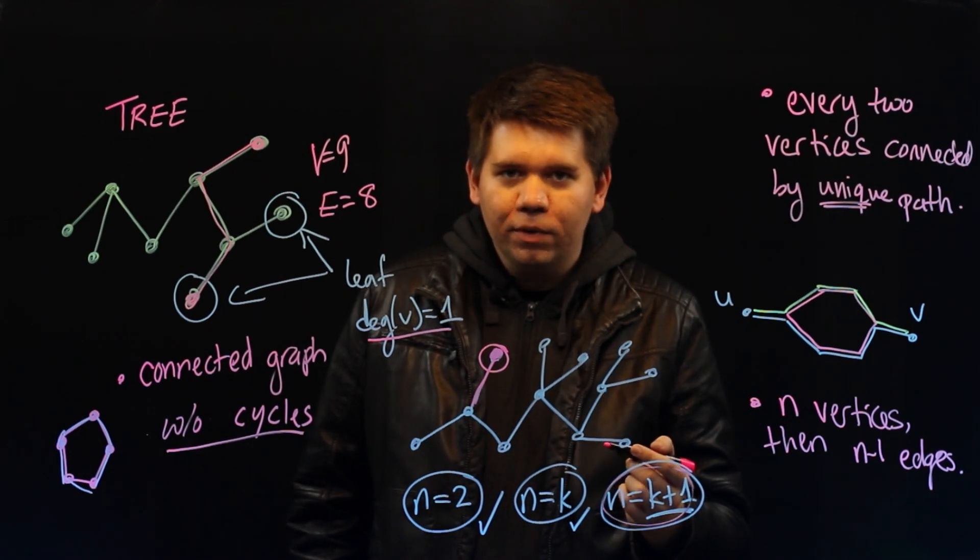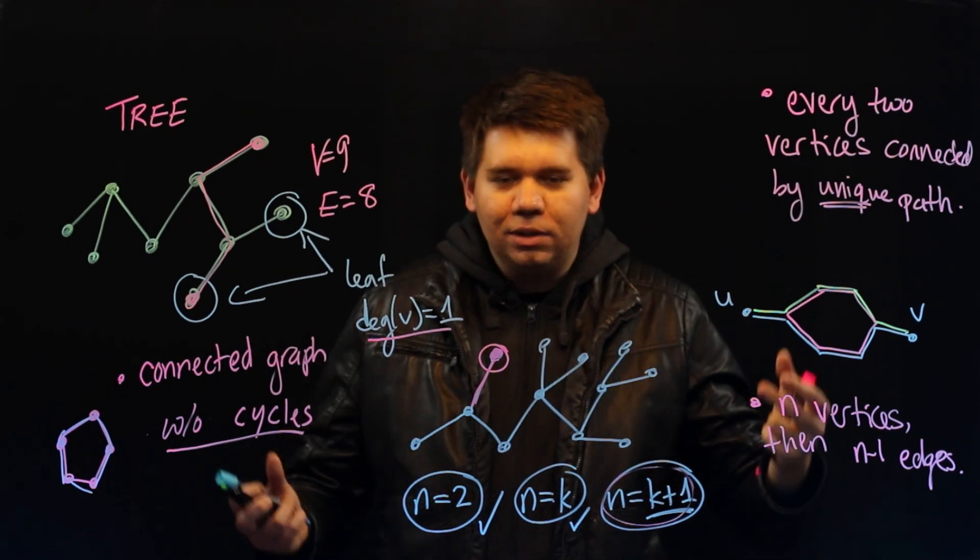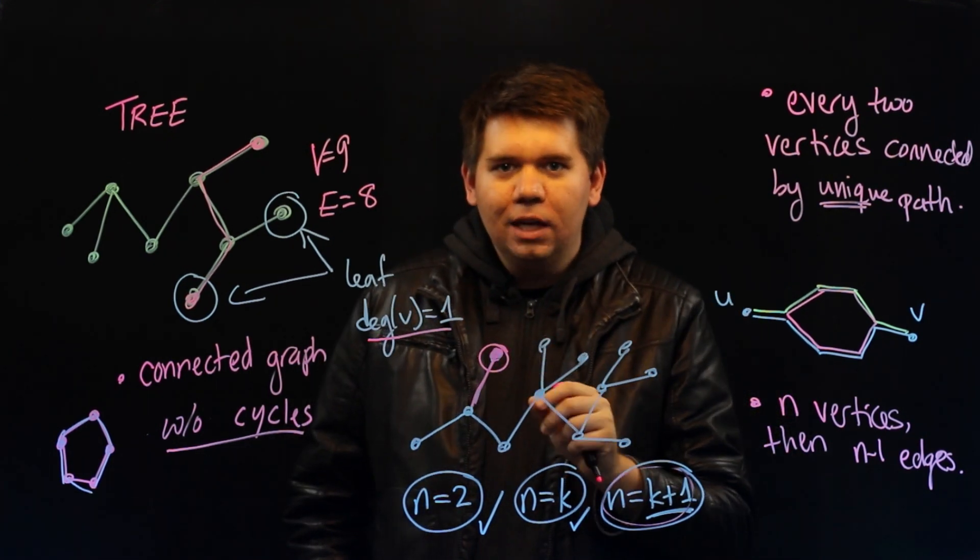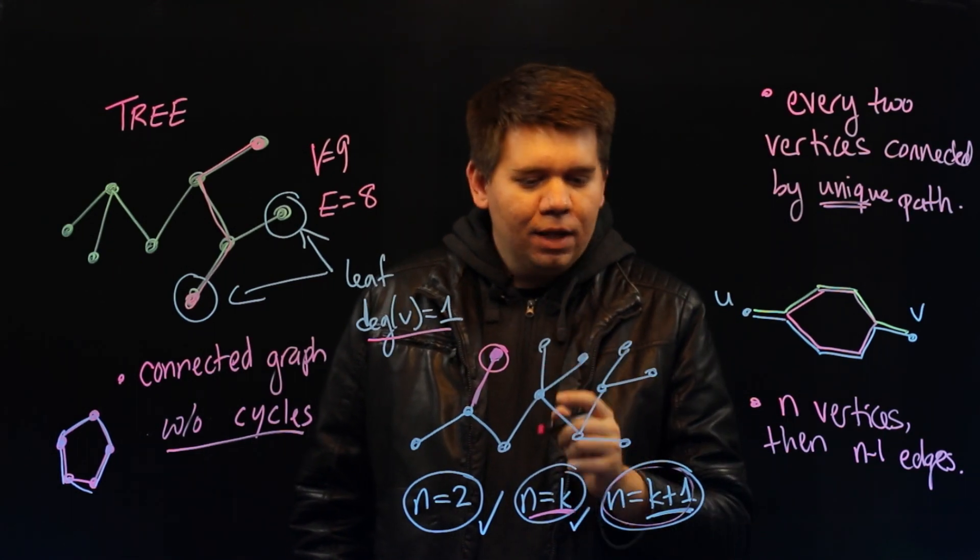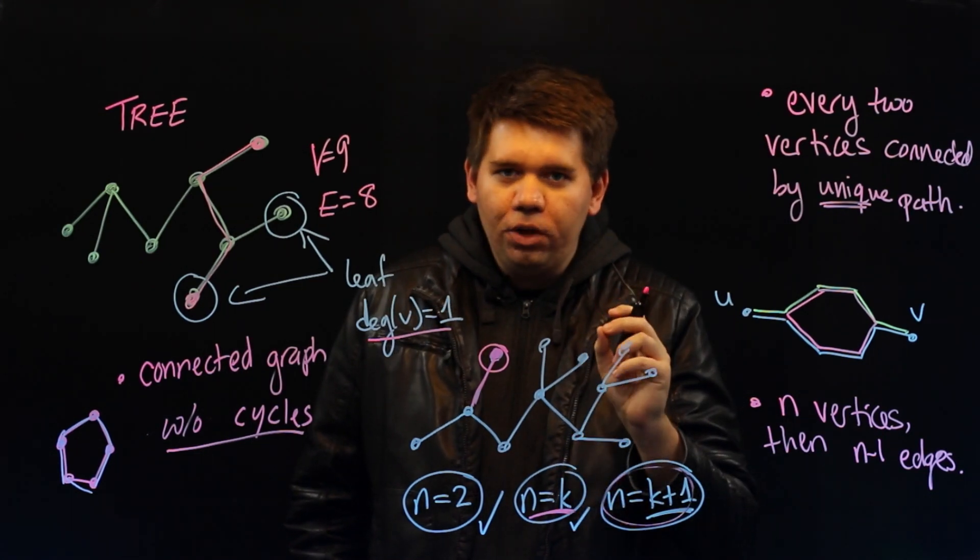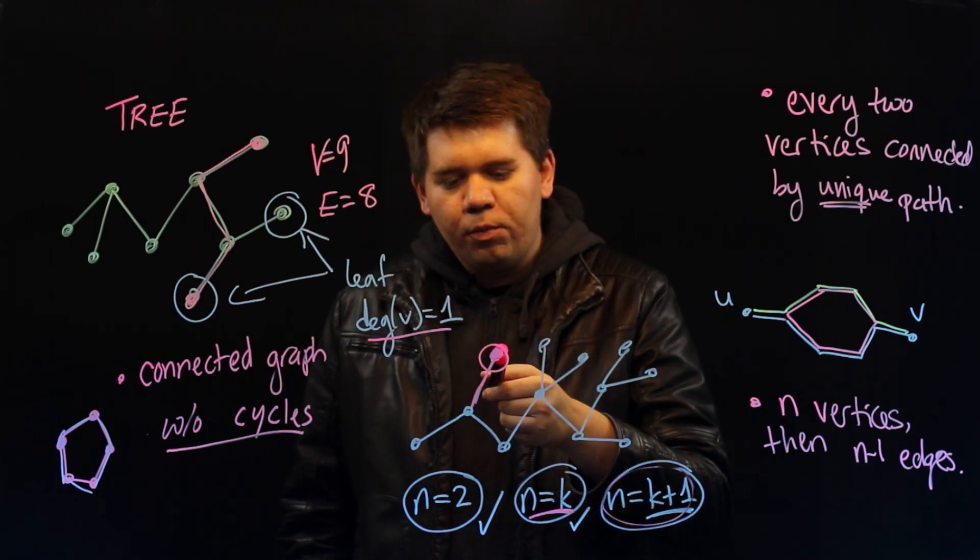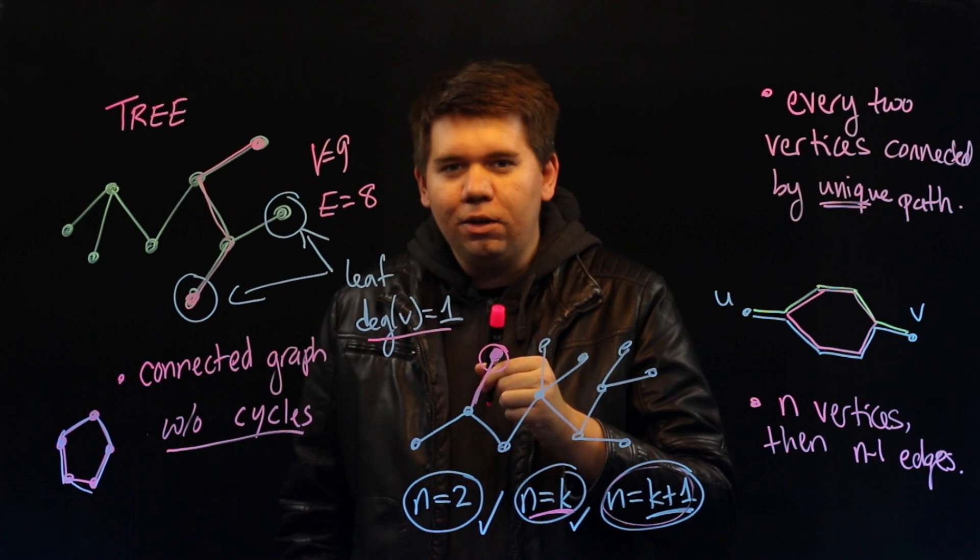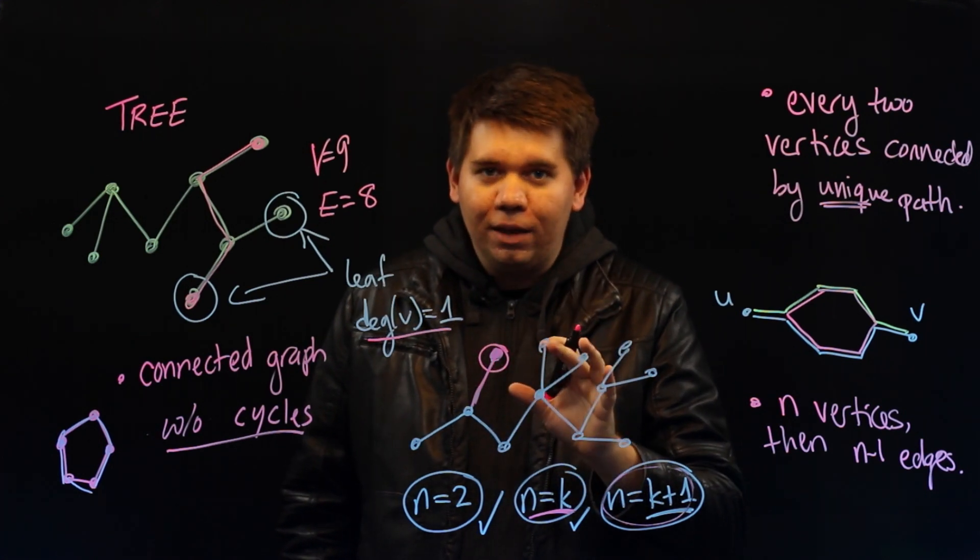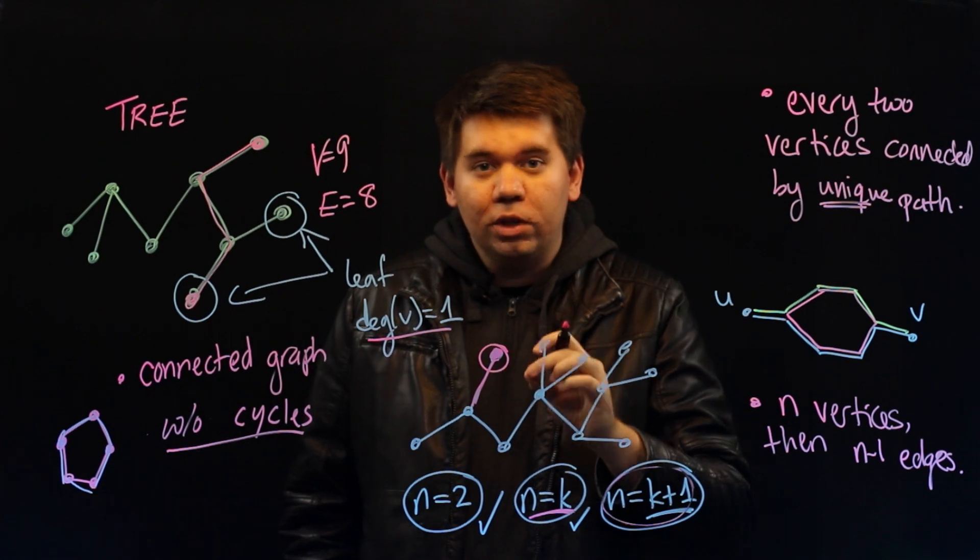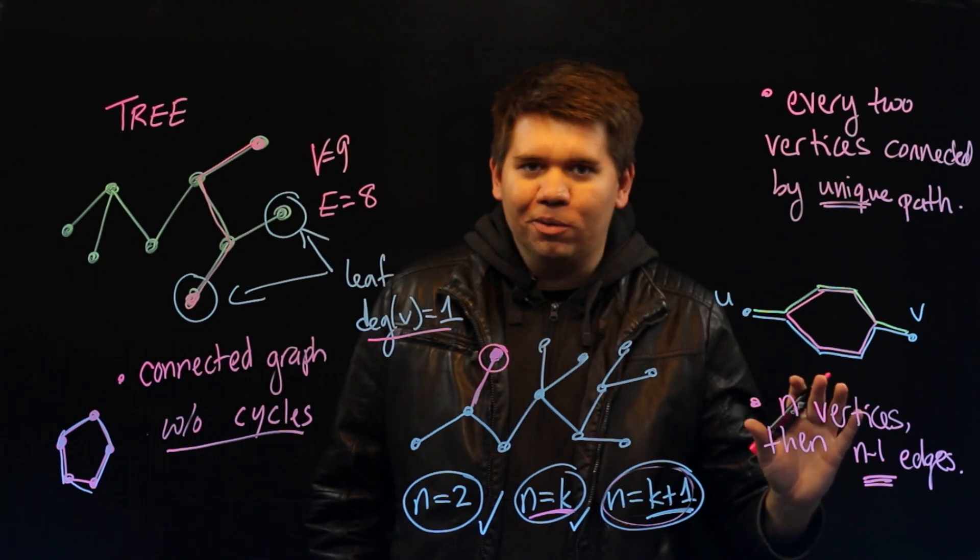What are we left with? Well clearly it's still a tree. We're not going to add any new cycles by just removing an edge. So now we have a tree with k vertices. So now we can assume the number of edges is one fewer than the number of vertices. But notice since we had removed a single vertex and a single edge to begin with, that means that we had to have to begin with the number of vertices was one more than the number of edges. So this relationship holds.